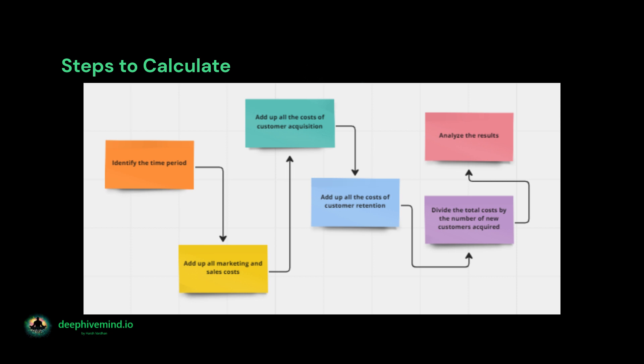Step two — add up all marketing and sales costs: calculate all costs associated with acquiring customers during the time period. This includes marketing expenses such as advertising costs, content creation, email marketing, social media, and events. It also includes sales costs such as salaries and commissions of salespeople, bonuses, and other incentives. Step three — add up all costs of customer acquisition, including expenses related to referral programs, discounts, and promotions. Step four — add up all costs of customer retention, including costs associated with customer service, support, and other activities aimed at retaining customers.